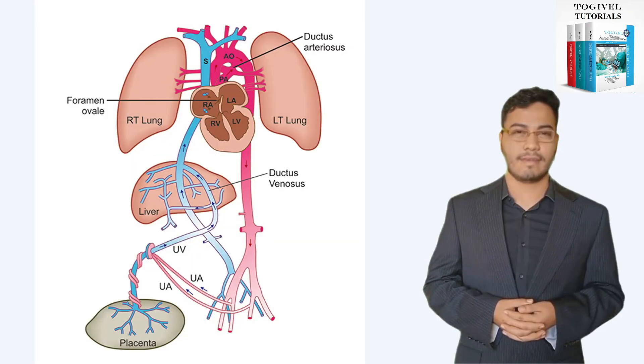So three shunts exist in the fetal circulation: one, ductus venosus; two, foramen ovale; three, ductus arteriosus.